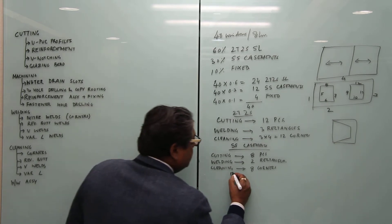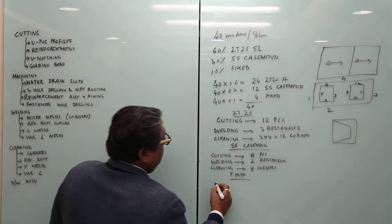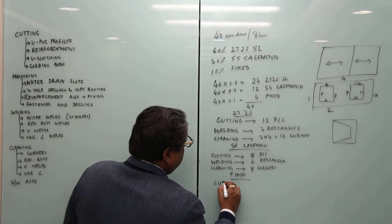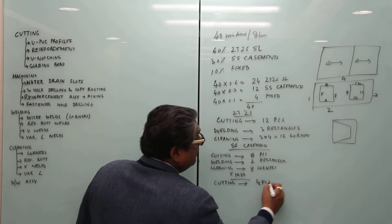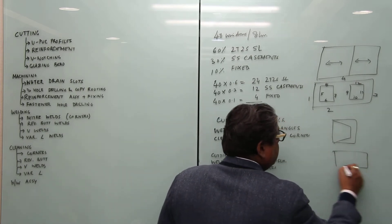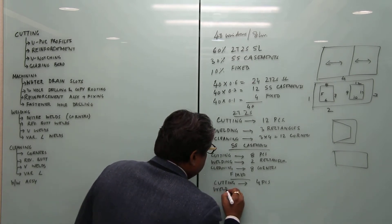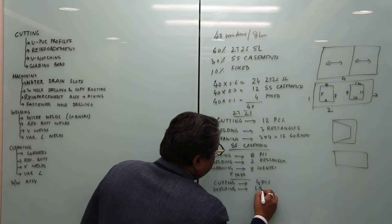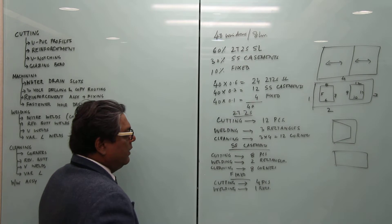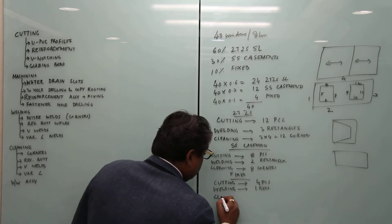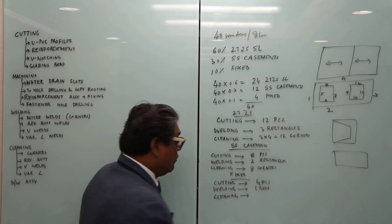For the fixed windows, each window has just a frame. You need to cut 4 pieces. For welding, there is 1 rectangle. For cleaning, there are 4 corners to be cleaned per fixed window.